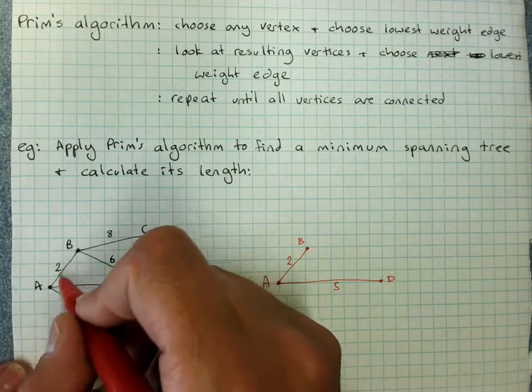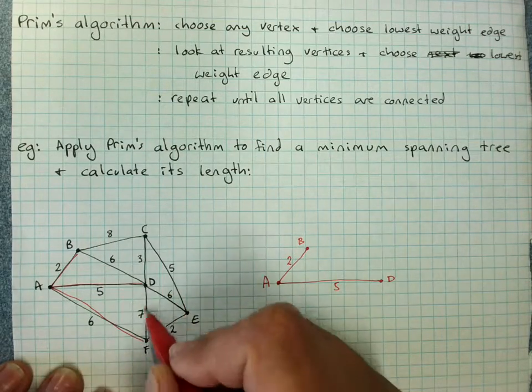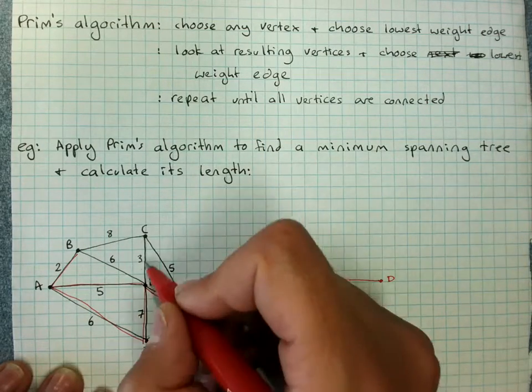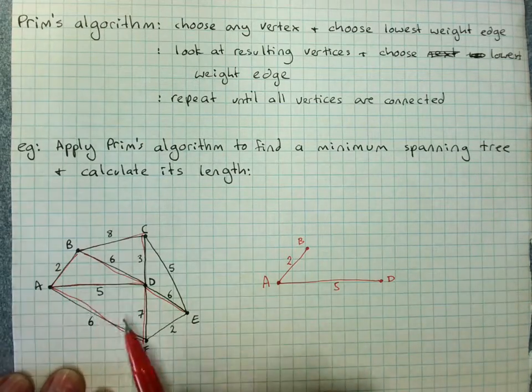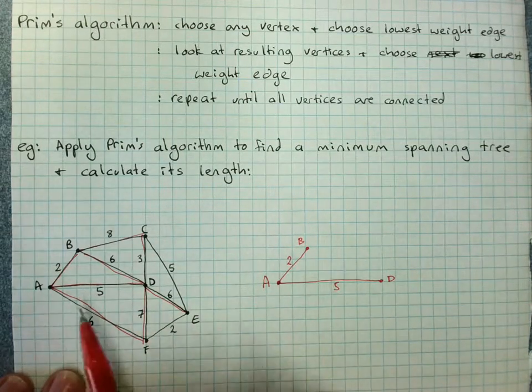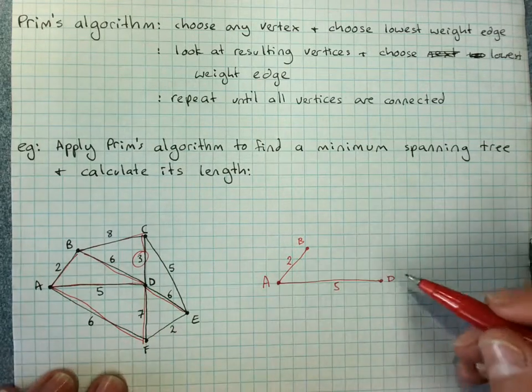So if you're getting stuck, you can start redrawing everything that's coming off A, B or D. So in all of those, what's the shortest one? It's this one here, C, D. Put that one in.